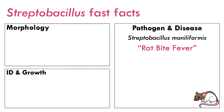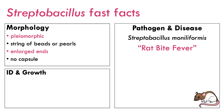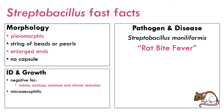Last but not least, Streptobacillus. These organisms sure cause a lot of funky-named diseases. Streptobacillus is a very pleomorphic, string-of-beads or pearls-looking gram-negative rod, with somewhat enlarged ends. They do not have capsules. From an ID and growth standpoint, they are negative for indole, oxidase, catalase, and nitrate reduction. They are microaerophilic — so a little more CO2 is needed — they require supplemented media, and like many others, are most reliably identified serologically.